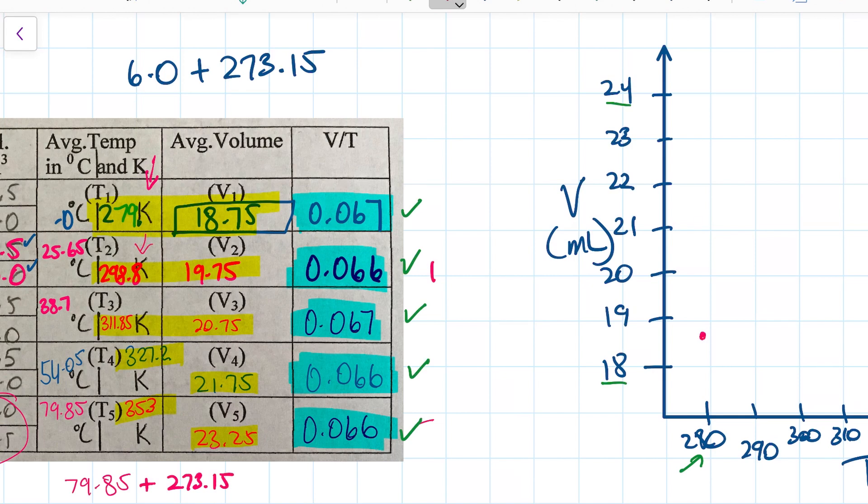And then for my next piece of data, I'm going to plot 298.8, so 299 with 19.75. 299 is about here, 19.75 about there.